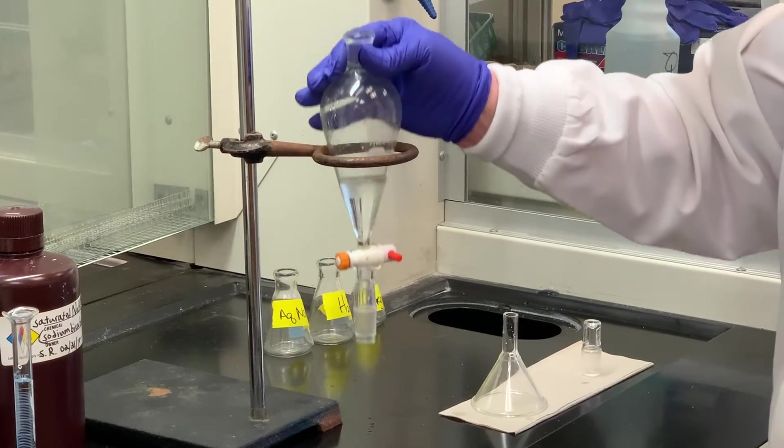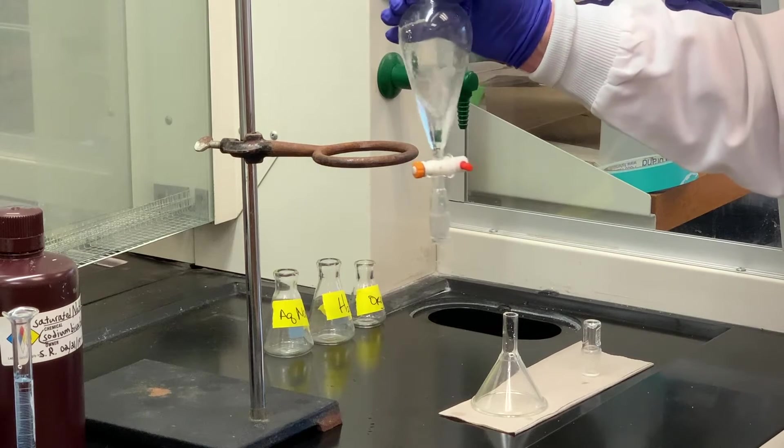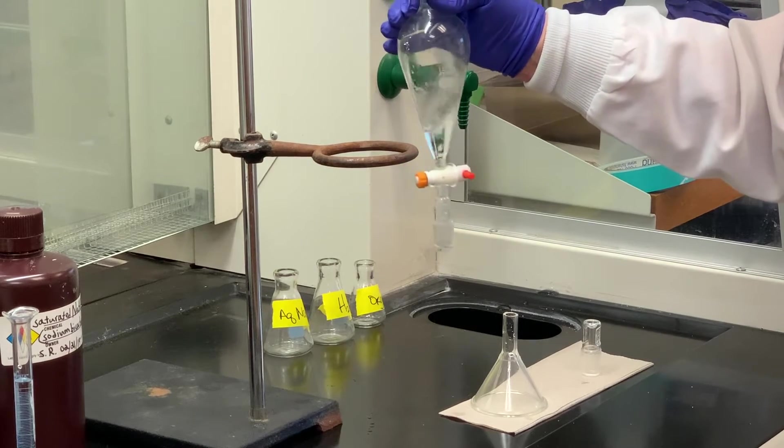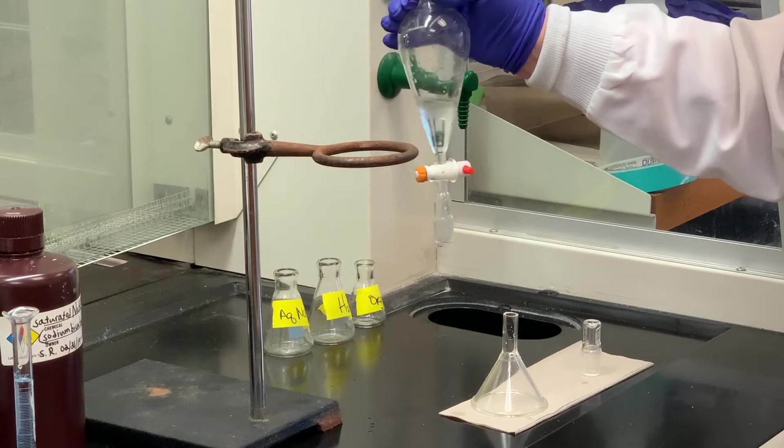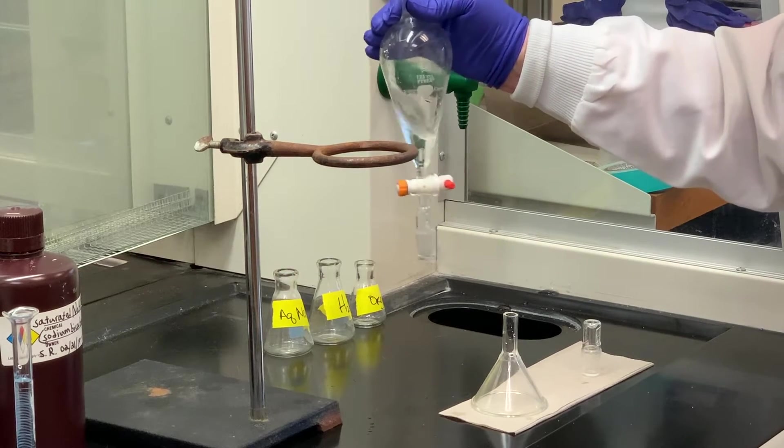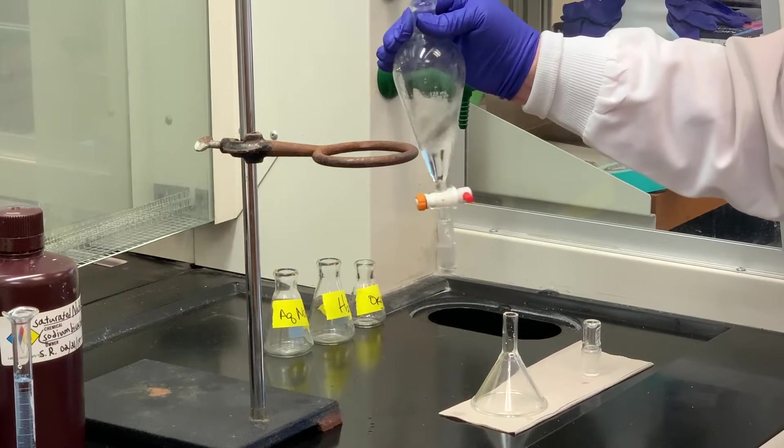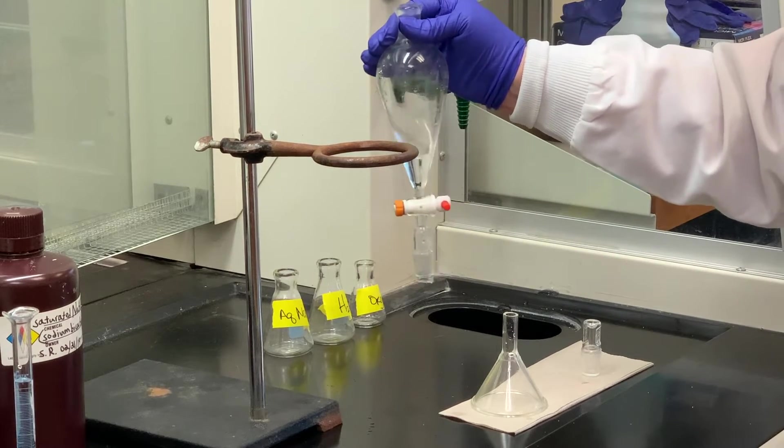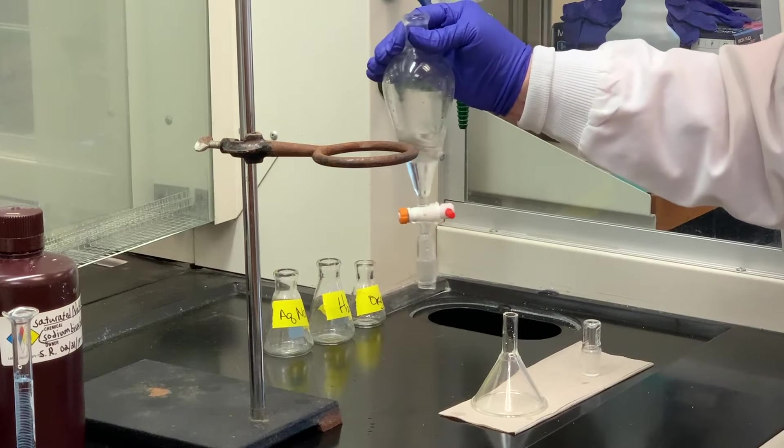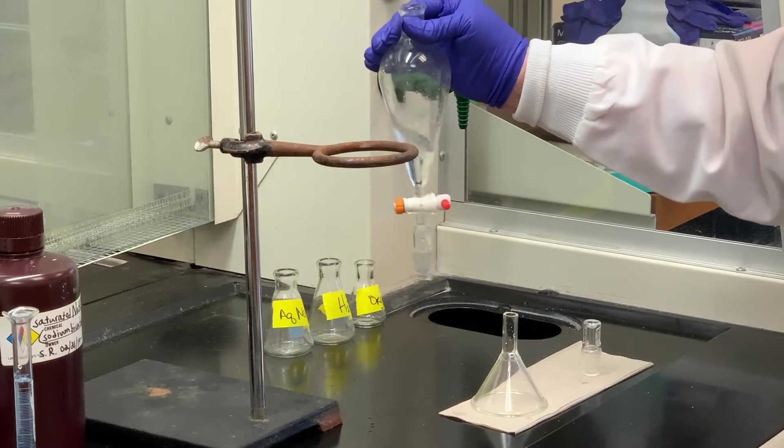And what I'm going to do here is I'm going to swirl this without the stopper, just in case there's any gas formation from the mixing. Swirl that. And then I'm going to put the stopper on, and then I'll invert it and release the pressure. Then I'll shake it vigorously just to make sure that if there is any acid present that it has combined with the sodium bicarbonate.